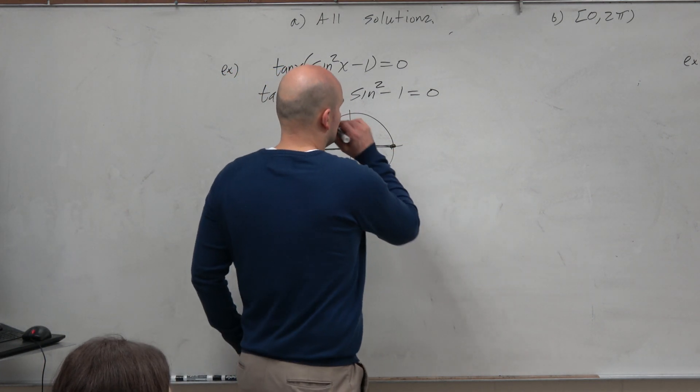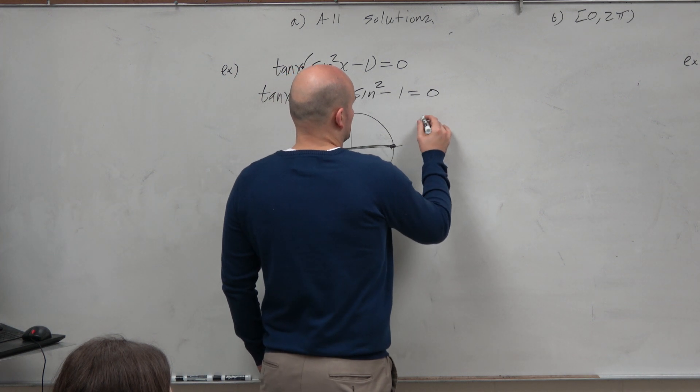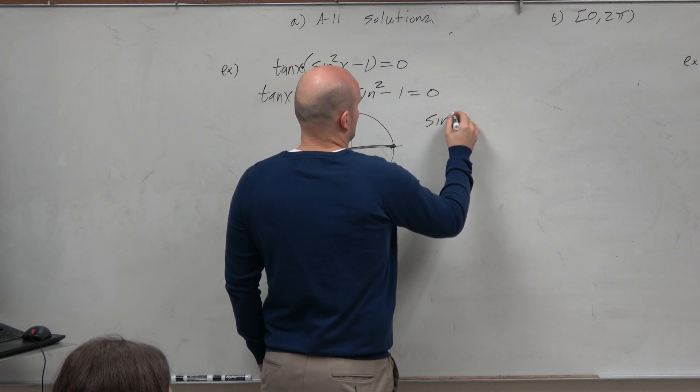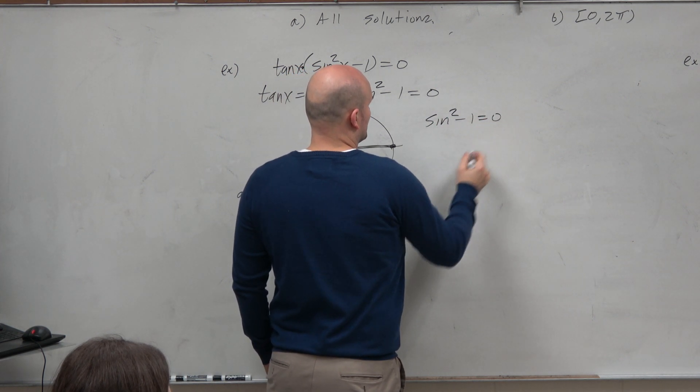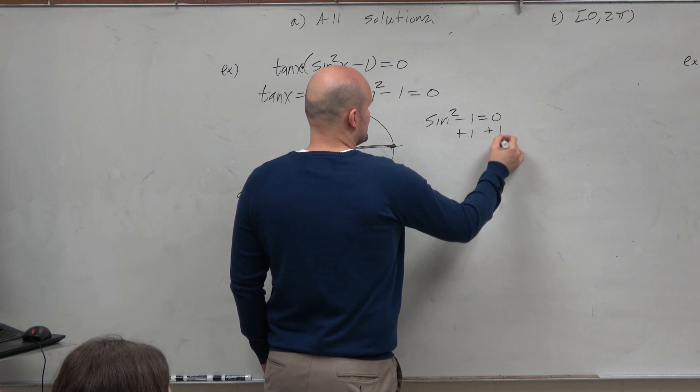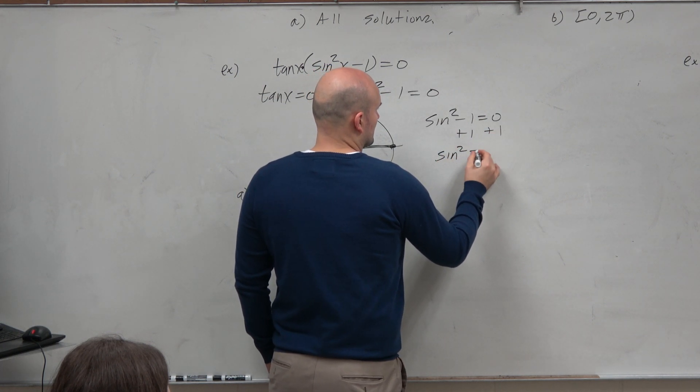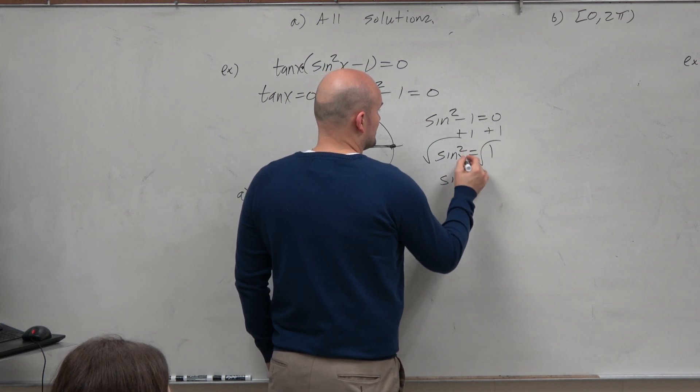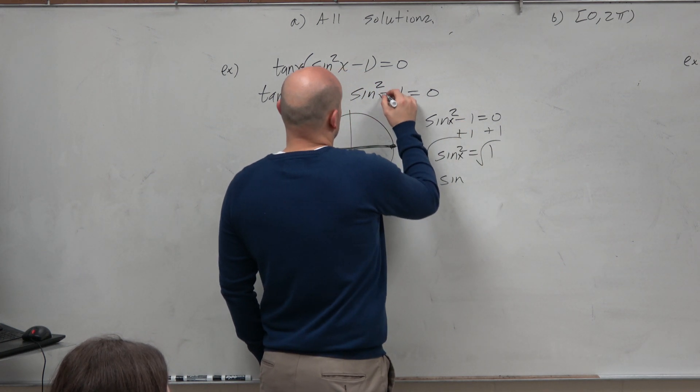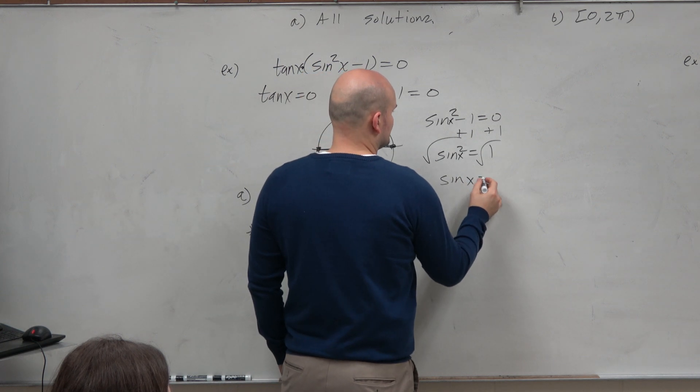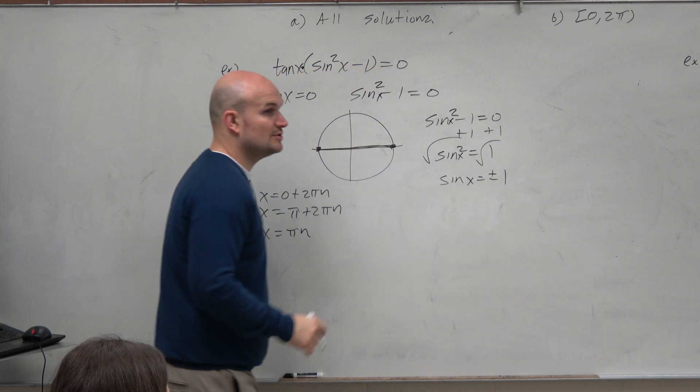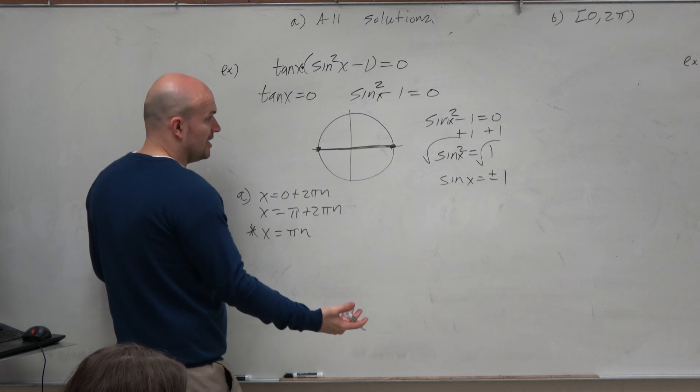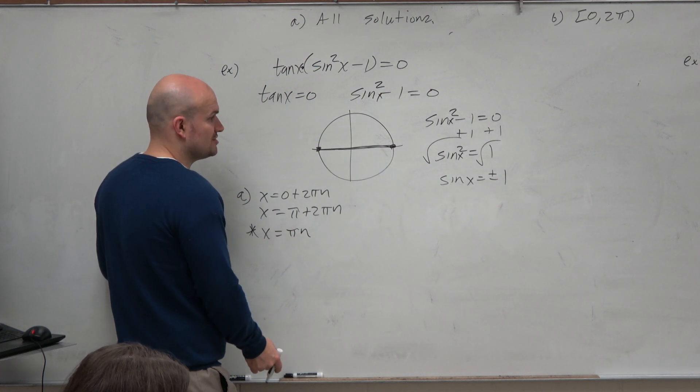Now for the next one, this one's kind of interesting because we could do sine squared minus 1 equals 0. And you could apply your inverse operations. And if you already forgot, remember you've got to make sure that you include plus or minus 1. So again, we'll look at the same circle and we say, all right, when is x equal to plus or minus 1? Well,